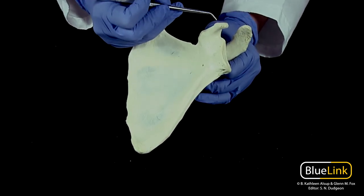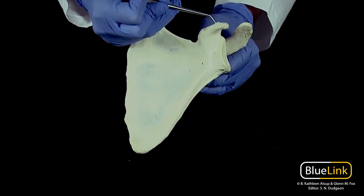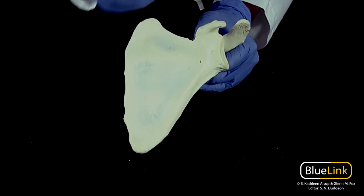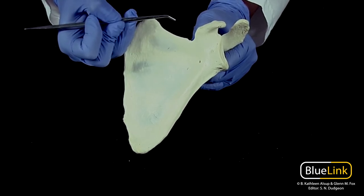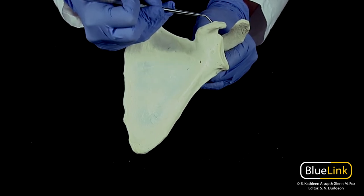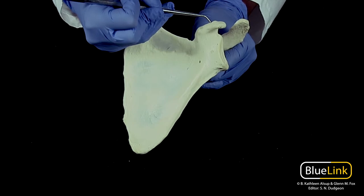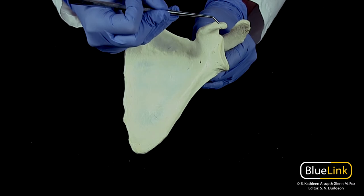Now looking back at the coracoid process, so projecting anteriorly from this lateral end of the bone, this is an area of quite a few muscle attachments. Your short head of the biceps brachii is going to originate here, as well as coracobrachialis, and pectoralis minor is going to insert on the coracoid process.